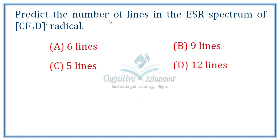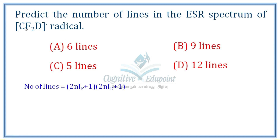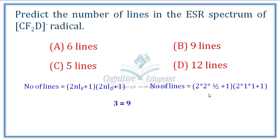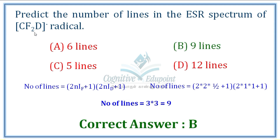Next question: Predict the number of lines in the ESR spectrum of CF₂D radical. The formula is (2NI + 1). For F, I = 1/2 and for D, I = 1. With 2 fluorine nuclei: (2×2×½ + 1) = 3. For D: (2×1×1 + 1) = 3. Total number of lines = 3 × 3 = 9. The correct answer is B, 9 lines.